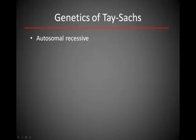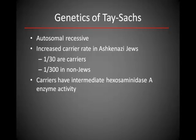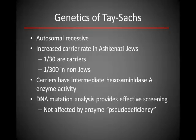Tay-Sachs disease is inherited as an autosomal recessive disorder, in which each parent is an asymptomatic carrier. There is a high carrier frequency in the Ashkenazi Jewish population, with the carrier rate being much lower in other populations. Carriers have an intermediate degree of enzyme activity but still have sufficient activity for normal functioning. DNA mutation analysis provides the most effective method to detect carriers, and is superior to enzymatic analysis, which can be subject to false positive results due to enzyme pseudodeficiency.